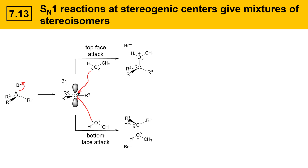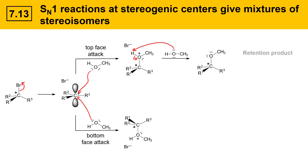Notice that these two structures are mirror images of each other. If you imagine a mirror here, the upper and lower species are reflections of each other. When the upper species is deprotonated, it gives the following neutral molecule, and this is described as a retention product. The reason it's known as retention is the stereochemistry is exactly the same as the starting material.